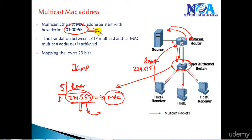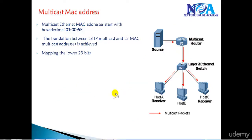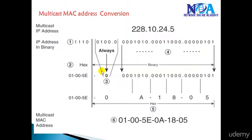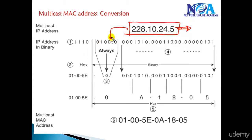To identify the multicast MAC address, it always starts with 01005E. This is standardized — any multicast MAC address will always start with 01005E. Let's understand the conversion process. We are going to send multicast traffic for group address 228.10.24.5. The conversion happens automatically, but here we will walk through the process, which involves writing the address in equivalent binary format.